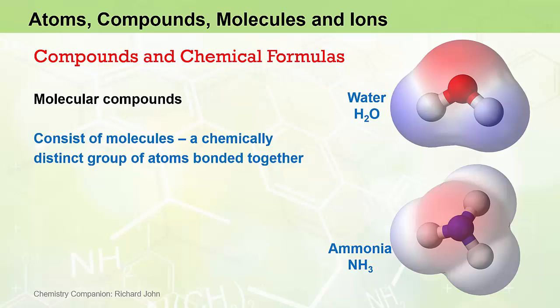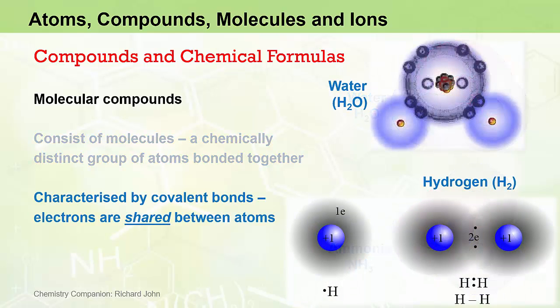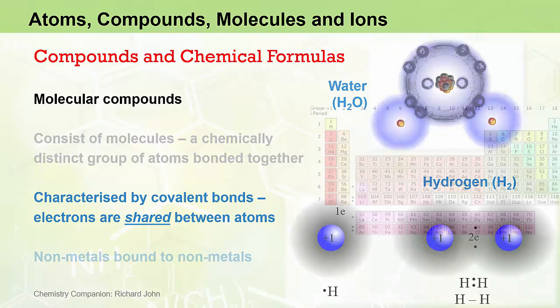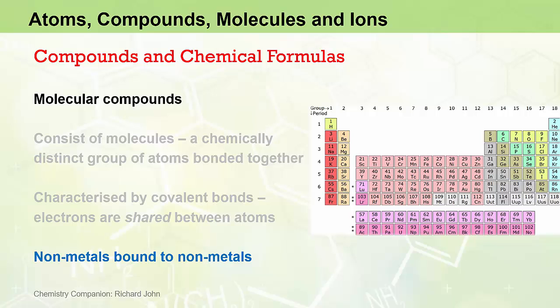We'll see in just a moment how that is different for ionic compounds. Molecular compounds are characterized by covalent bonds in which electrons are shared between atoms within the bond. They consist of non-metals bound to non-metals, involving elements from the top right-hand side of the periodic table as well as hydrogen, which sits on the left-hand side even though it is a non-metal.